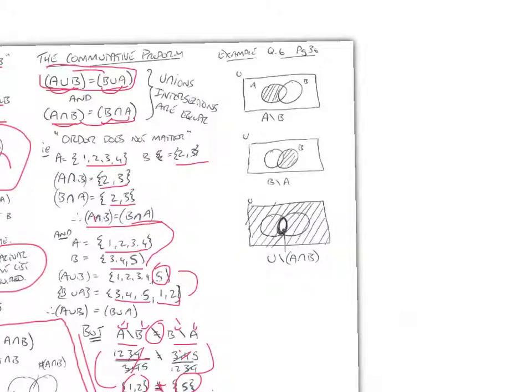So, here's an example from the book, page 36, question 6. So, if we were to shade in A less B, it's that shaded area there. B less A is that shaded area. And U less A intersection B. Well, you identify A intersection B and U less all of that. This is as if I covered that to reveal everything else.